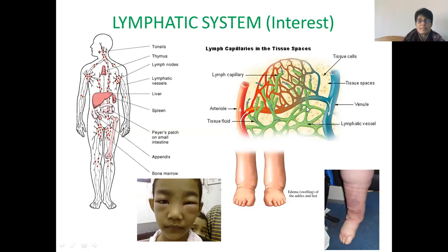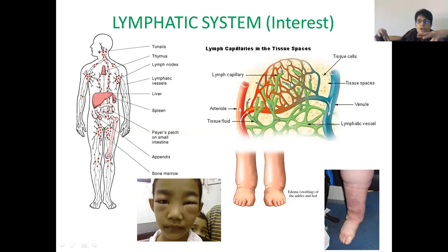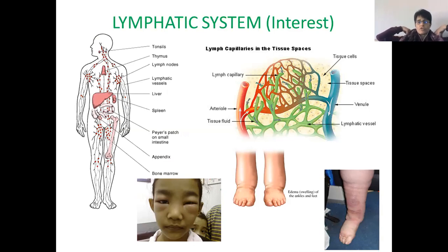Sometimes edema is because one of these lymphatic vessels is blocked. You can see how they are blind-ending tubes — like linked straws — and they take away this excess tissue fluid. All that tissue fluid goes back into larger lymph vessels and eventually drains into the arteries from your arms. There are lots of these lymph vessels all over the body — from the legs, from the arms, from the head, and even from your abdominal organs.